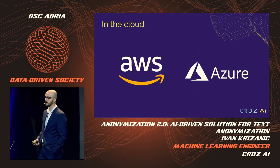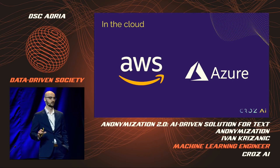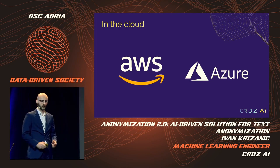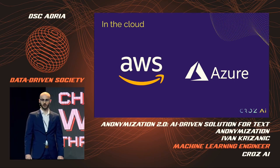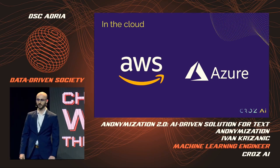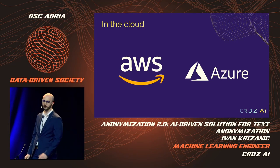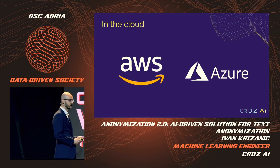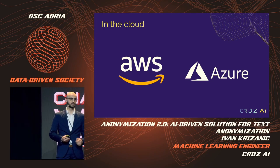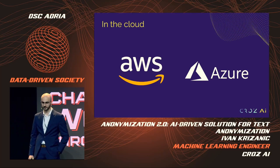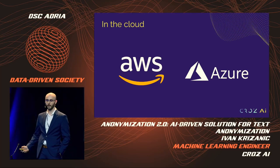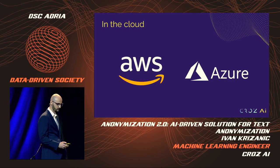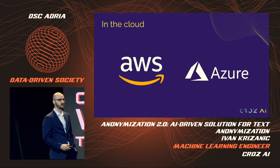To get more technical, the next question is where we implemented our solution. For us it was a pretty easy choice — we went with the cloud. Cloud has some major advantages over on-premises solutions, especially for these modern, often experimental projects. Cloud is extremely scalable and flexible, so if your project shows promise, a company can quickly scale it up. It's also quite cost-effective because you don't have to invest in any additional infrastructure. Cloud is also very secure and accessible from all around the world.